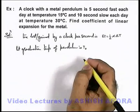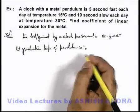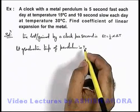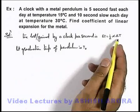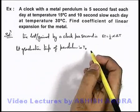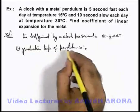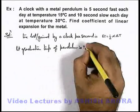Then we can write the time lost or gained per second, or per day even, by multiplying this expression by the number of seconds in a day. So we can write like, graduation temperature of pendulum is T₀, then the time...